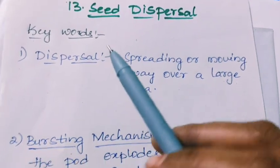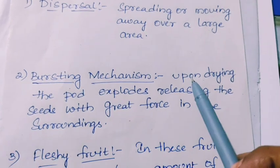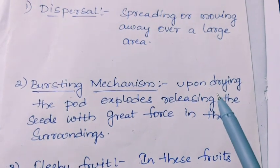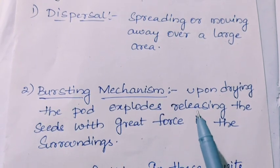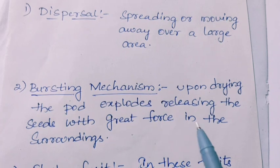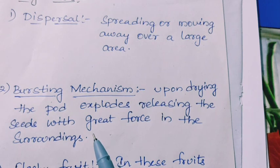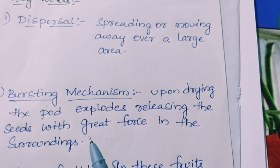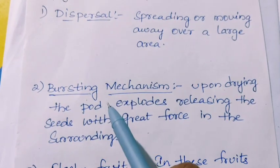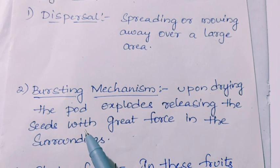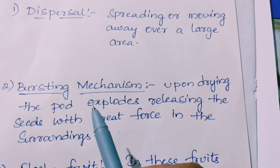The second keyword is bursting mechanism. Bursting mechanism means upon drying, the fruit explodes releasing the seeds with great force into the surroundings. When the fruit has been dried and we sprinkle water, it bursts open and the seeds fall on the ground. For example, the kanakambaram plant and tulasi — when we sprinkle water on them, the seeds will burst open.